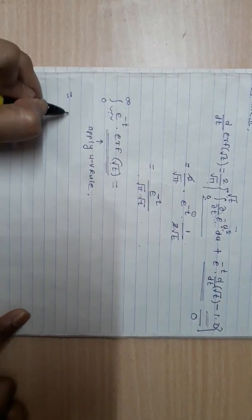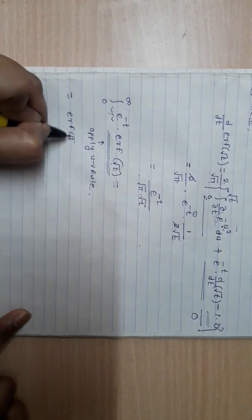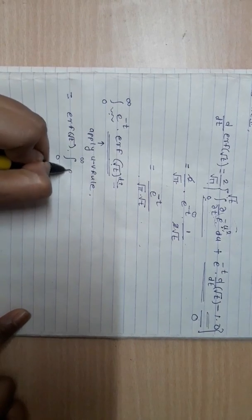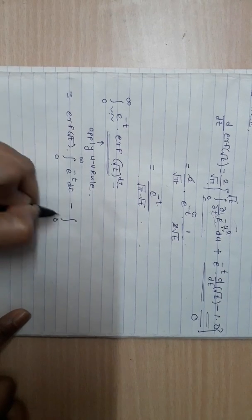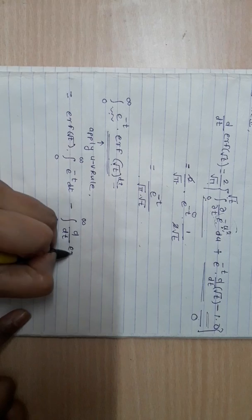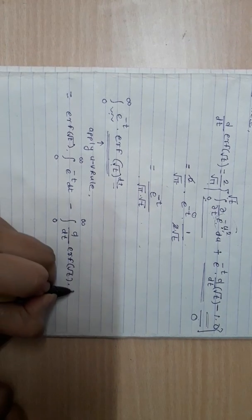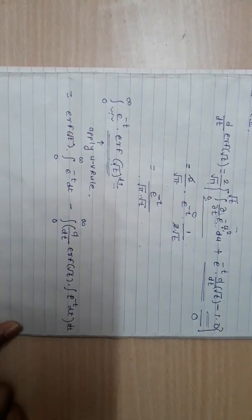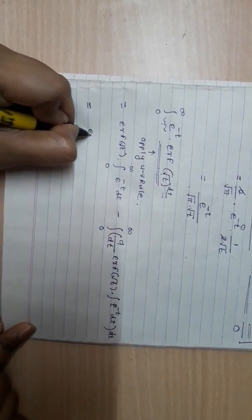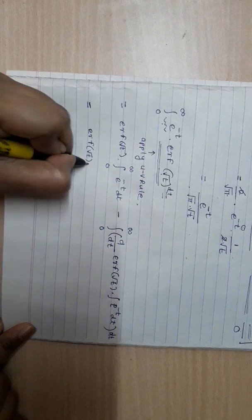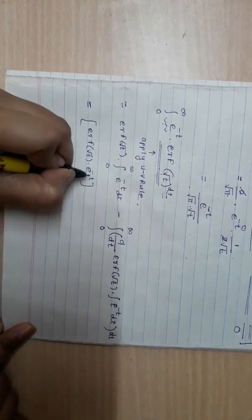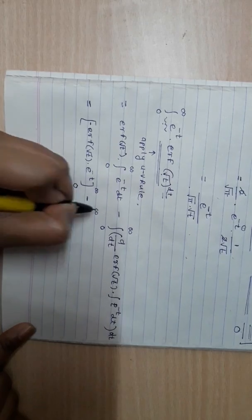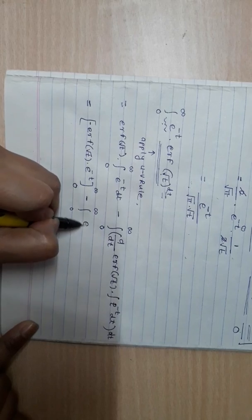Applying the UV rule: [erf(√t) · ∫₀^∞ e^(−t) dt] minus ∫₀^∞ [d/dt(erf(√t)) · ∫e^(−t) dt] dt. This gives: erf(√t) · (−e^(−t)) evaluated from 0 to ∞, minus ∫₀^∞ [e^(−t) / (√π · √t)] · (−e^(−t)) dt.